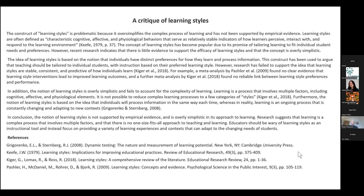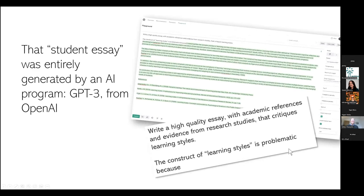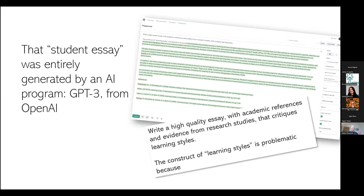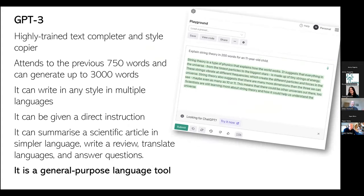As you probably imagined, that student essay was entirely generated by an AI program. It was generated by GPT-3 from the OpenAI company, and the interface to it is very simple — you just get a screen where you type in instructions. I typed in: write a high quality essay with academic references and evidence from research studies that critiques learning styles, and then I gave it the introduction — 'the construct of learning styles is problematic because' — I pressed the submit button and it generated the rest, including the paragraphs and the references in neat APA format.